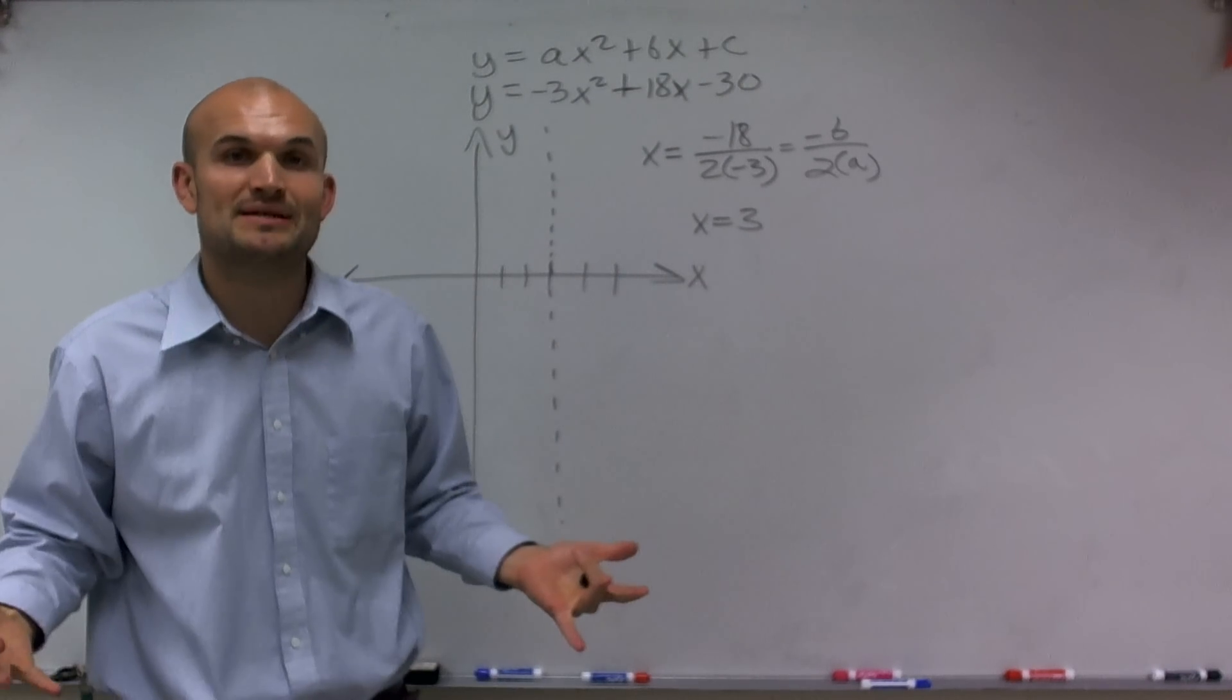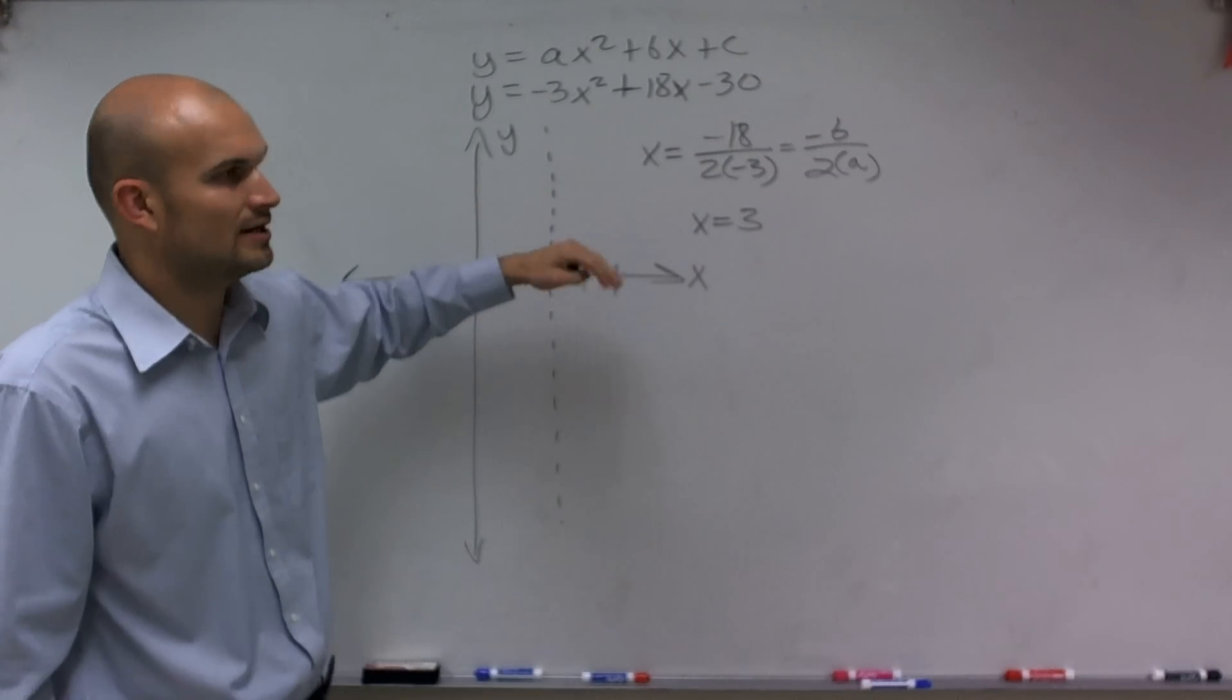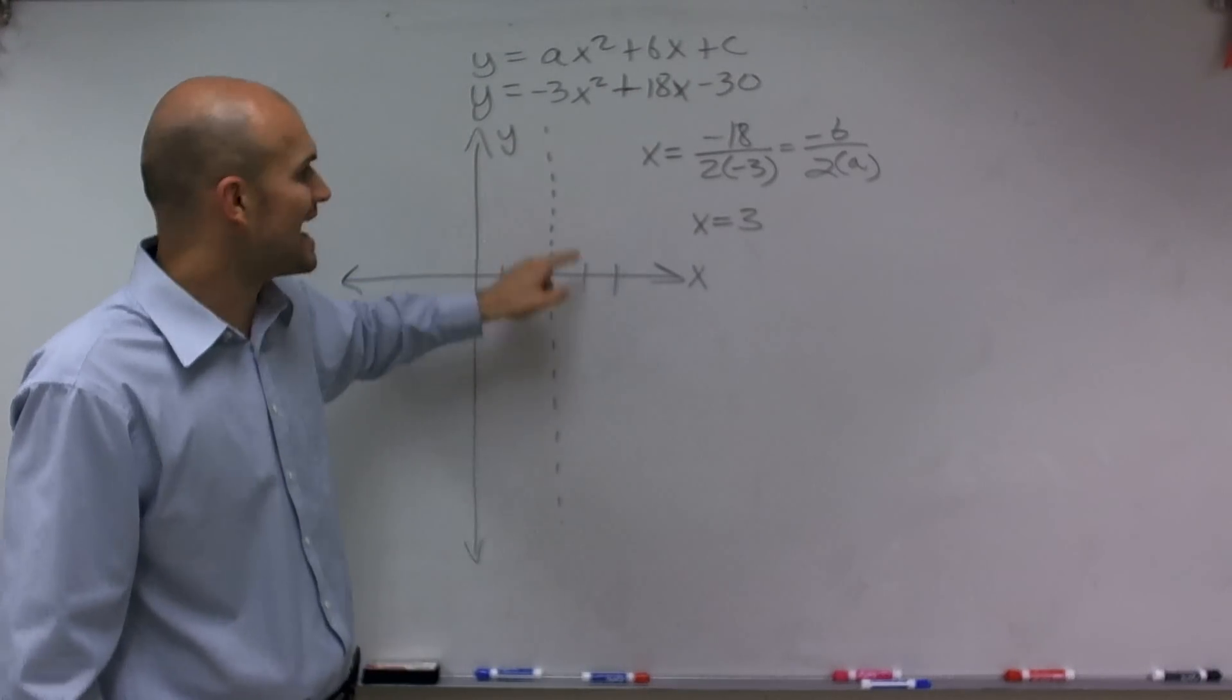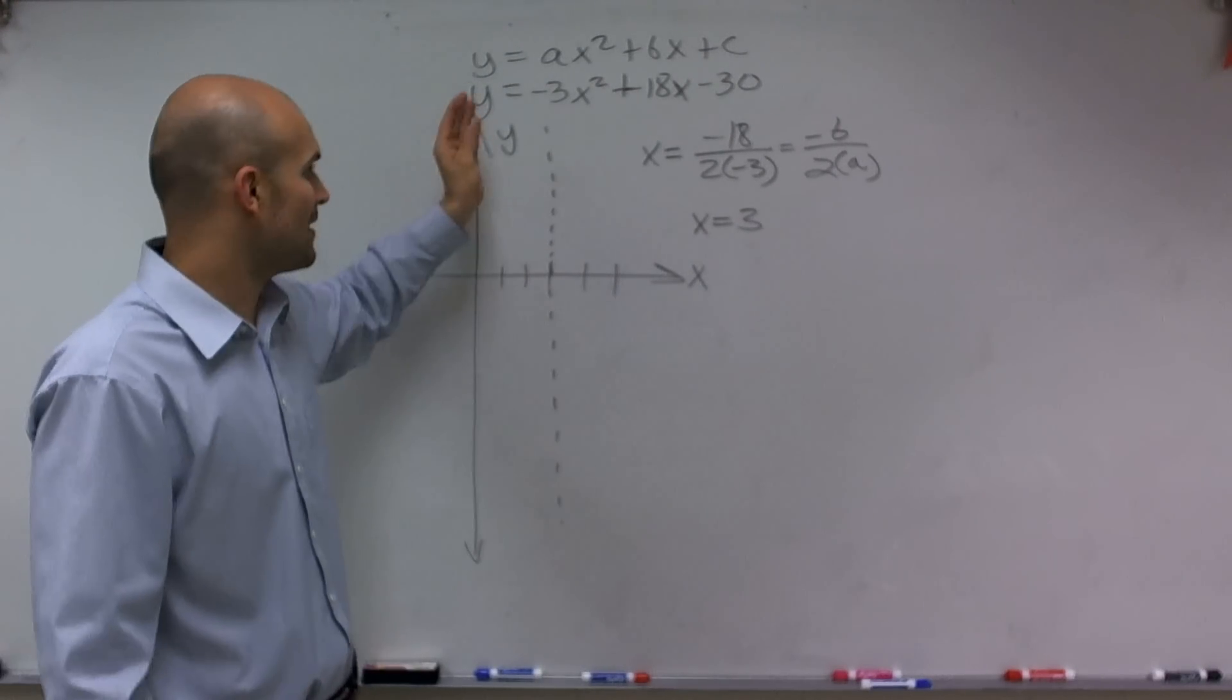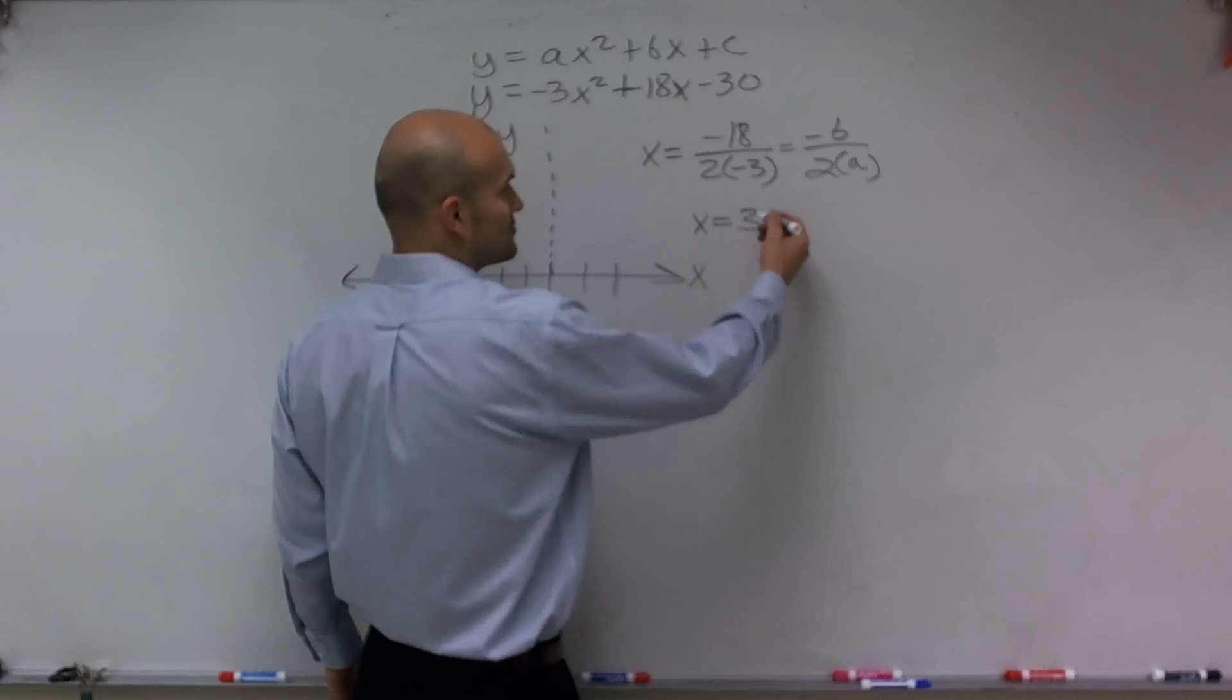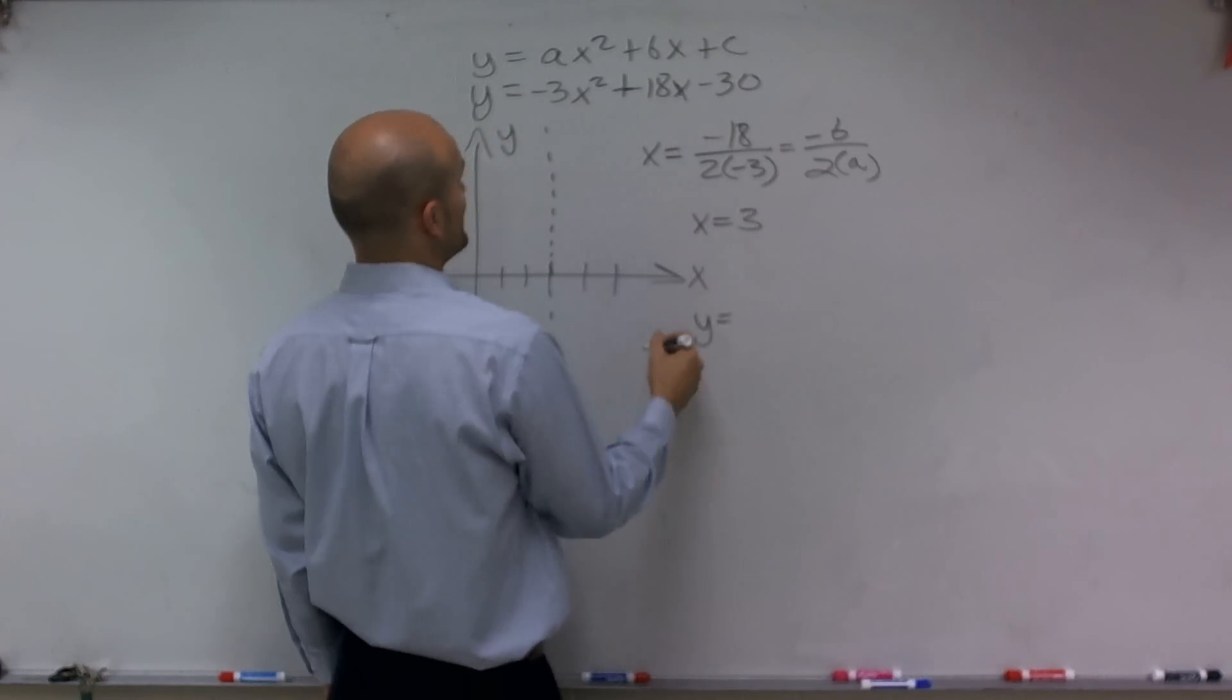So the next important piece of information is to find the vertex. Remember, my parabola, the high and low point of my parabola, is on this line of symmetry. So therefore, I know the x value of it. I just need to determine what the y value is. So if x equals 3, what is y equal? To determine that, we just plug 3 in for x.